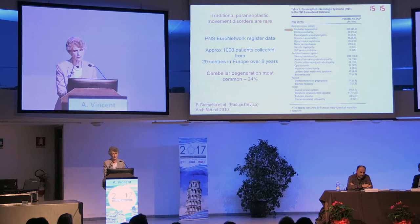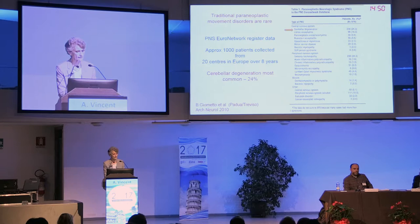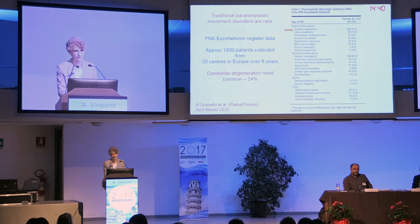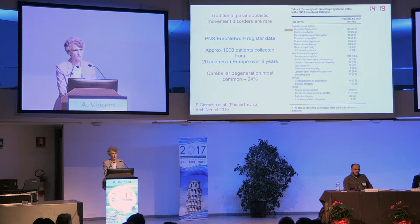How common are these paraneoplastic cases of cerebellar degeneration? Quite frankly, not very common. This was an EU-funded network led by Bruno Giometto, who collected 1,000 patients with clinical data from 20 centres over eight years. That means most centres were only seeing about one and a half patients with cerebellar degeneration per year - about six patients a year with paraneoplastic disorder overall. Cerebellar degeneration is the most important and frequent of these conditions, in about 25% of patients. So they're not common, but it's still an important disease to recognise.